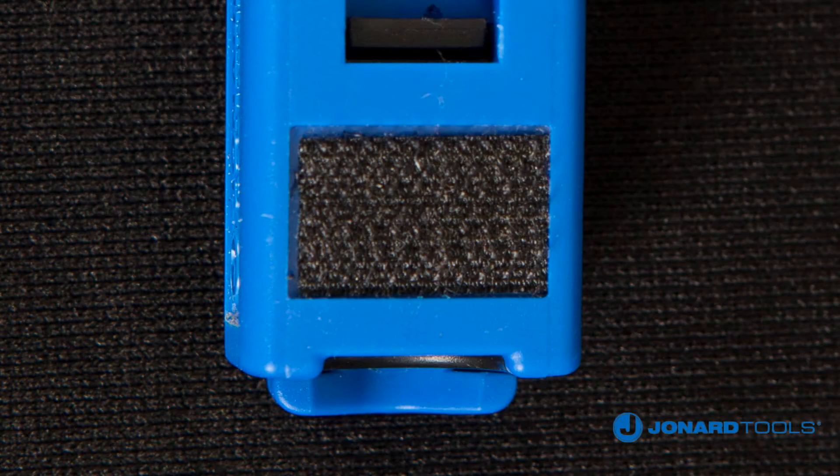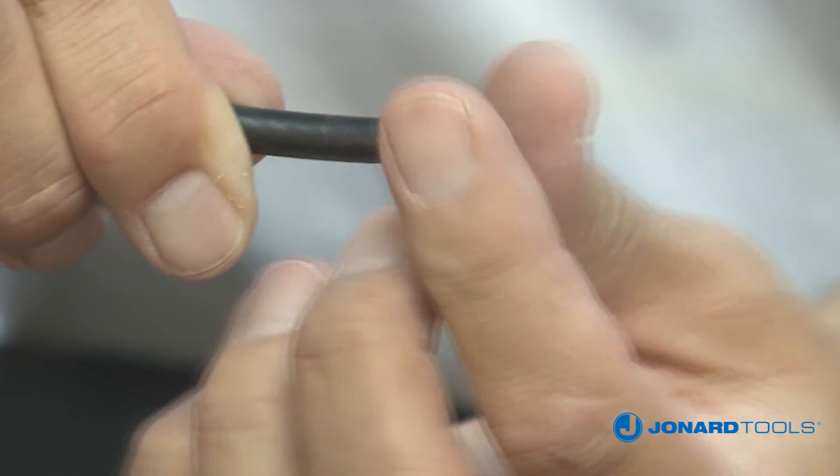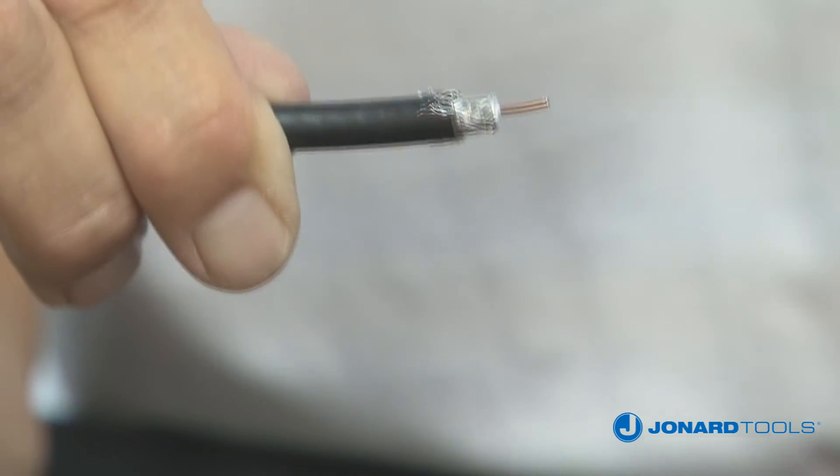To use, simply stroke the braid down towards the cable. The cable is now ready for termination.